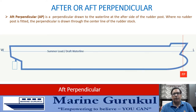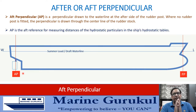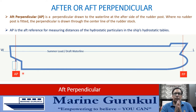In the profile view with the forward perpendicular already marked, we draw a perpendicular to the waterline through the center of the rudder stock — this red vertical line is the after perpendicular of the ship. The after perpendicular is the reference for giving the longitudinal location of the center of buoyancy, center of flotation, and other hydrostatic particulars in the hydrostatic tables.